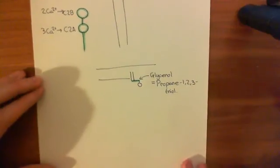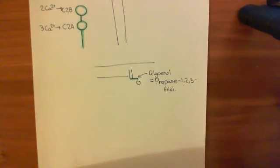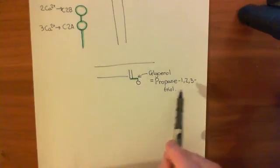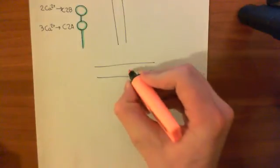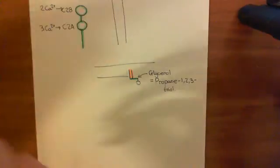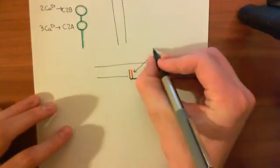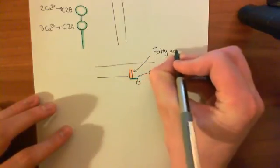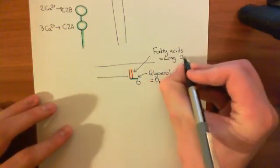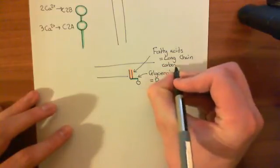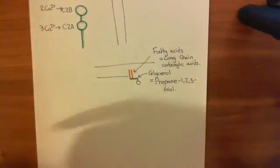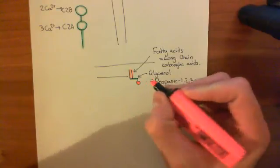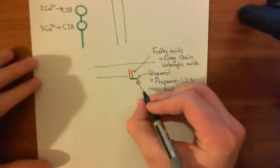Propane-1,2,3-triol is a three-carbon molecule where all of the carbons have an alcohol group coming off it. The first two carbons have their hydroxyl groups, and esterified to those two hydroxyl groups are long-chain carboxylic acids — also referred to as fatty acids — shown here in orange. These fatty acids bind to those hydroxyl groups by ester links. Off the third hydroxyl group of the glycerol molecule is a phosphate group, bound via a phosphoester bond to that third hydroxyl group.